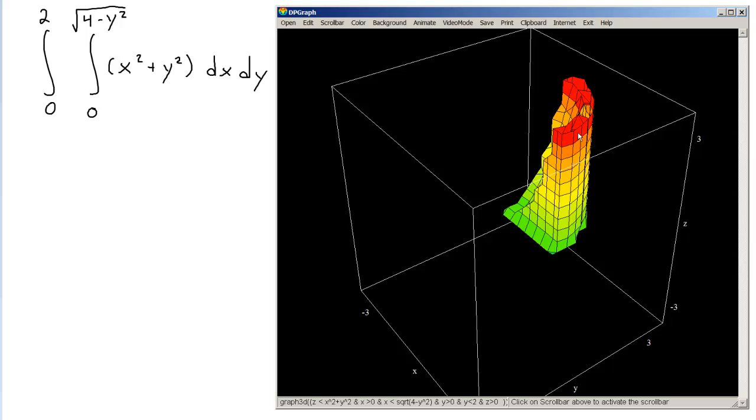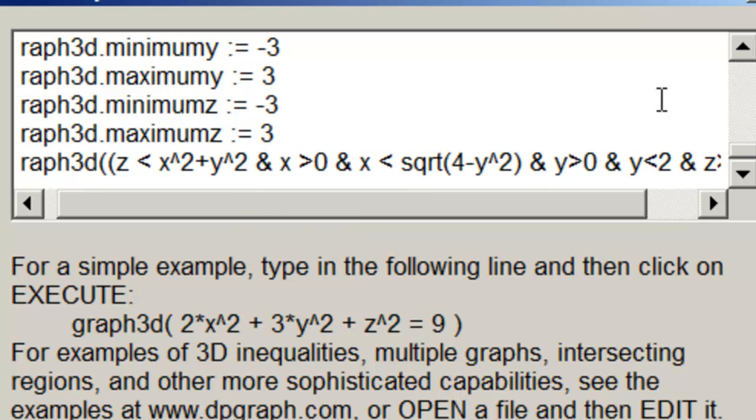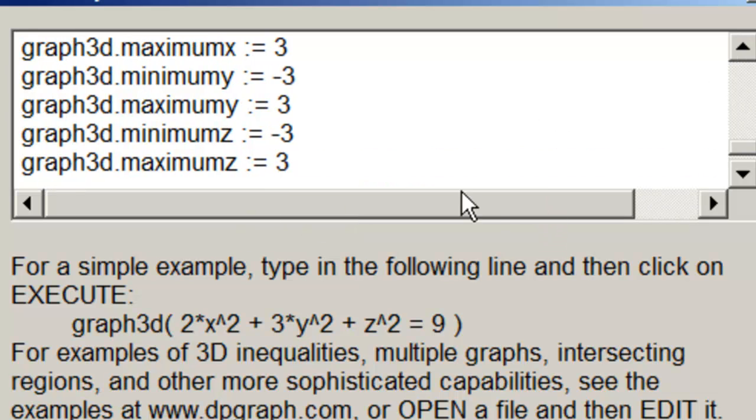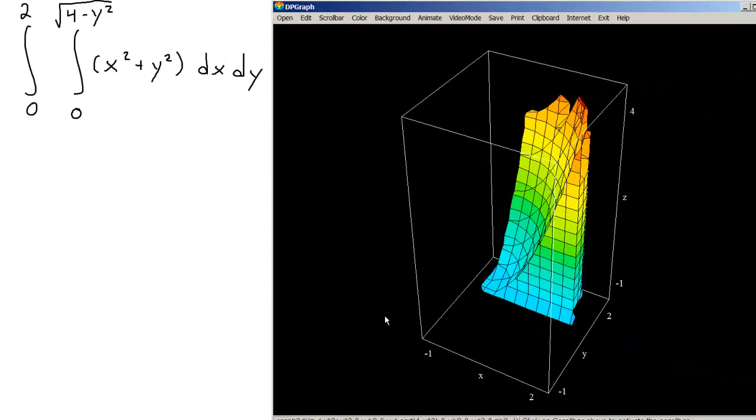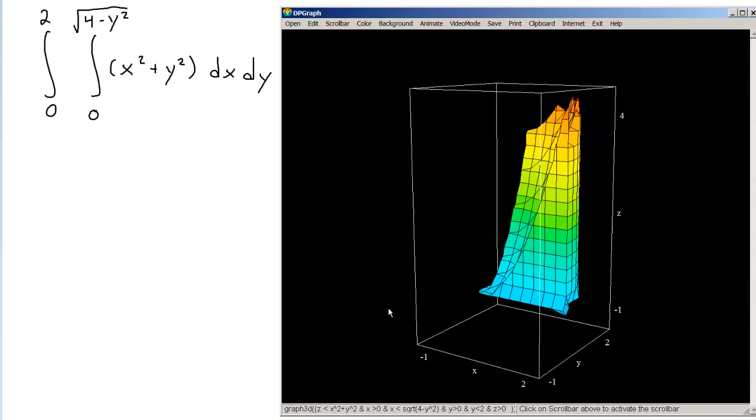As you can see, the top is kind of sliced off a bit, so we'll go and change our bounds around a little bit. Doing that is pretty easy to do. Our minimum x is going to be negative 1, maximum x is going to be 2. Minimum y, again we'll call it negative 1, maximum y positive 2. Our z will be minimum of negative 1 and a maximum of say, call it 4. That's a little bit better view of what we're doing.